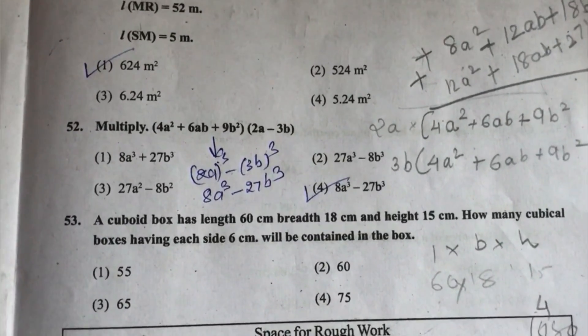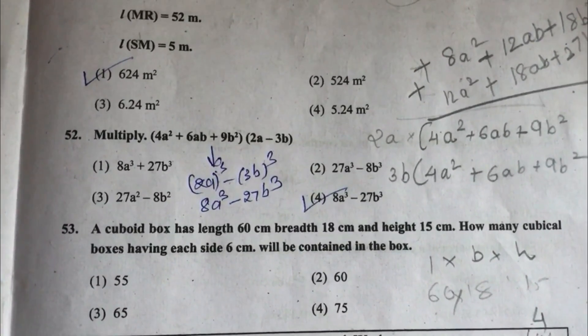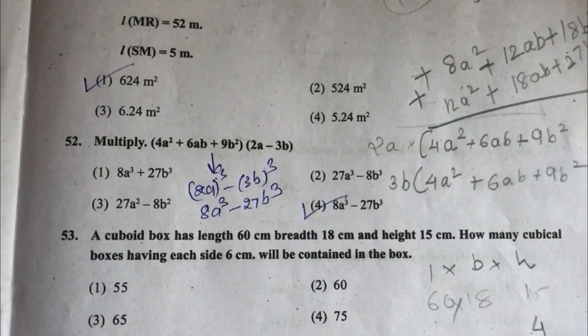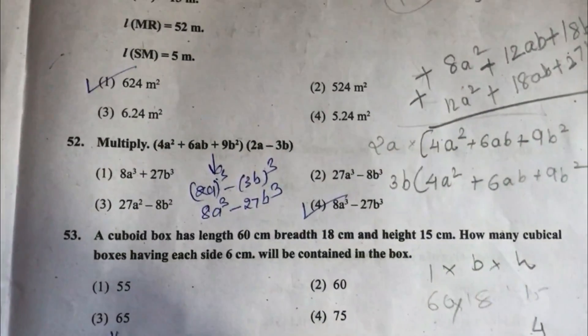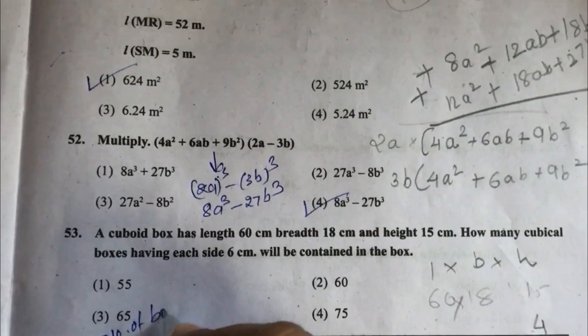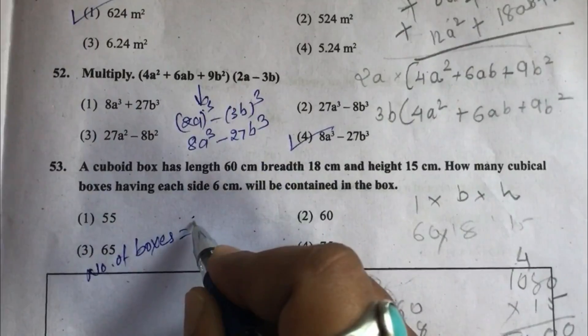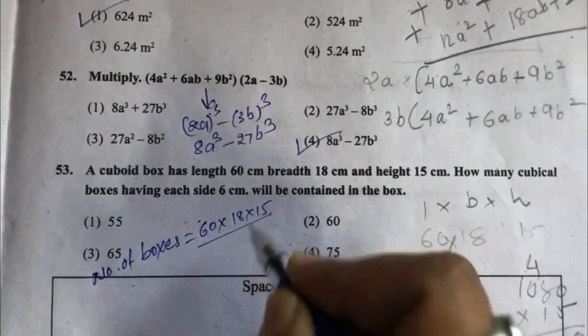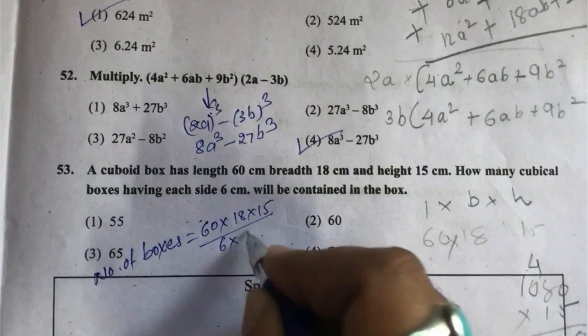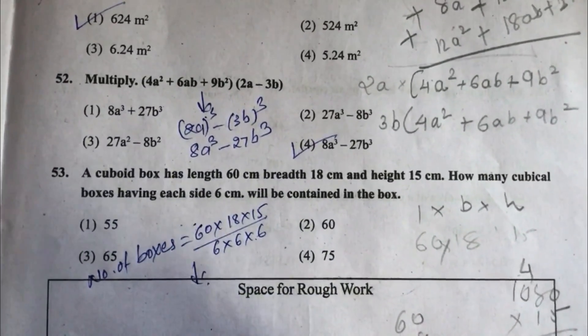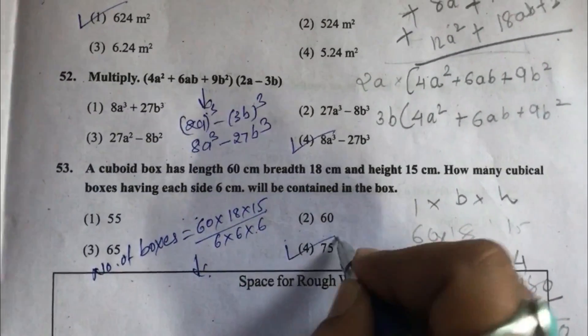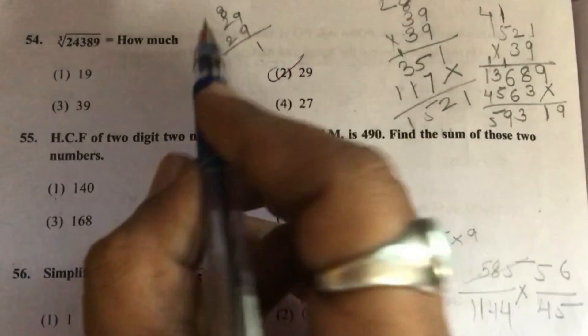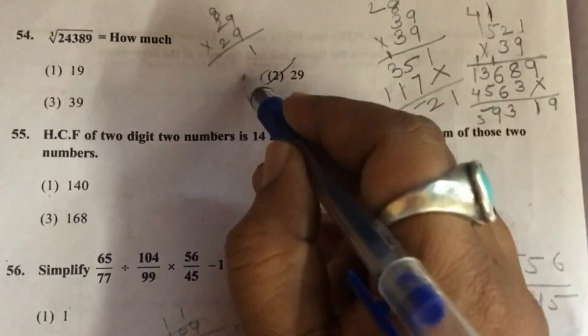Question 54: A cuboid box has length 60 centimeter, breadth 80 centimeter and height 15 centimeter. How many cubical boxes having each side 6 will be contained in the box? Number of boxes equals volume of cuboid upon volume of cube. We will solve, then we will get answer 75, option number 4. Question 55: Cube root of 24389, answer is 29.